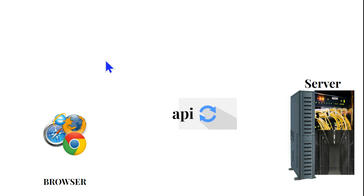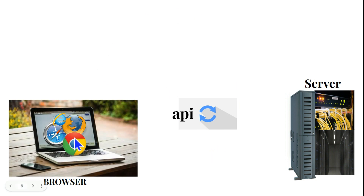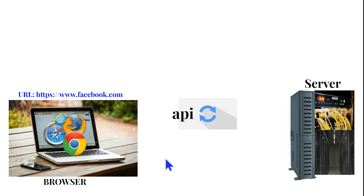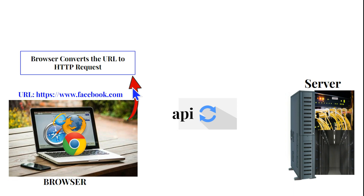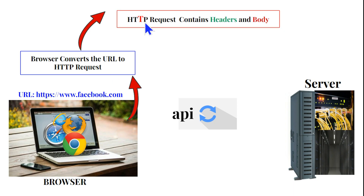Let's go through a demonstration. On your laptop, you open a browser — Chrome, Edge, Firefox, or Safari. The moment you type a URL like www.facebook.com, the browser converts that URL into an HTTP request. HTTP stands for Hyper Text Transfer Protocol, which transfers data. The URL — the Uniform Resource Locator — is converted into this HTTP request.